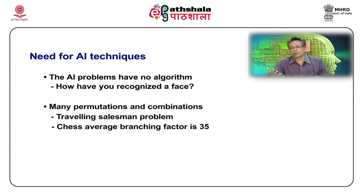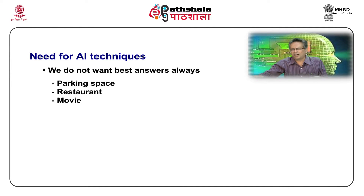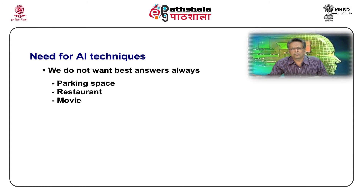Sometimes — and that's the third point — in many cases we don't really want the best answer. For example, if I go out and park my car somewhere, I'm not going to look for the best parking place — I'll just find a place that's good enough. If I want to go to a restaurant, I won't find the best restaurant in the city; I'll just get one which satisfies the minimum of my needs. Most of us are looking for solutions which satisfy some minimum criteria we have in our mind.